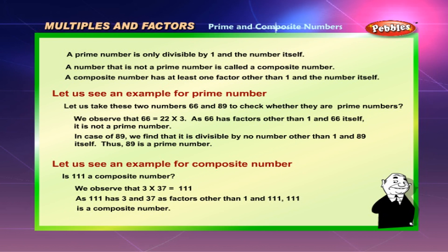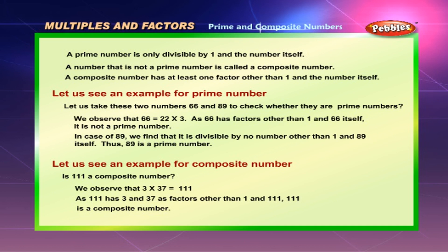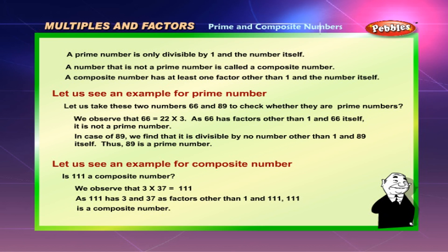Prime numbers and composite numbers: a prime number is only divisible by 1 and the number itself. A number that is not prime is called a composite number; it has at least one factor other than 1 and itself. For example, 66 equals 22 into 3, so it has factors other than 1 and 66, meaning it is not a prime number. In the case of 89, it is divisible by no number other than 1 and 89, so 89 is a prime number.